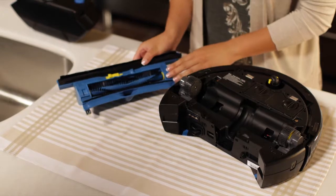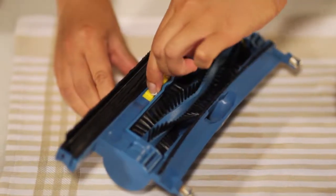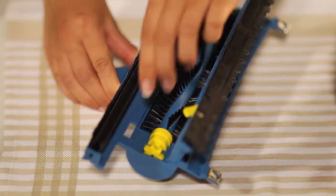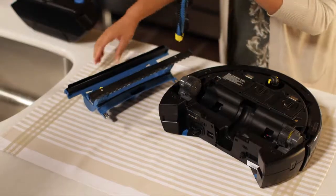To rinse the cleaning head and roller brush, push the roller brush cover release latch to the unlocked position and open the roller brush cover. Remove the roller brush.